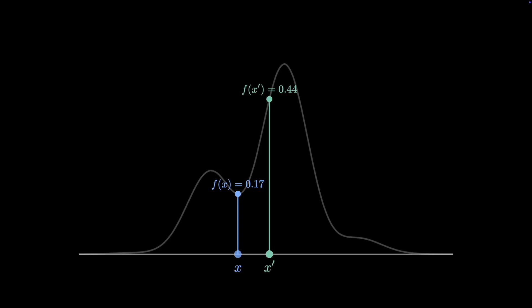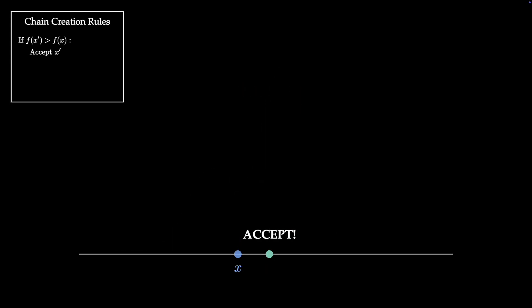Based on these values, we refer to a set of chain creation rules to make our decision. The first rule tells us that if the density of our proposed point is higher than the density of our current point, in other words it's more likely, we should accept it. Since this is currently the case, we accept the proposed point x prime and add it to the chain.